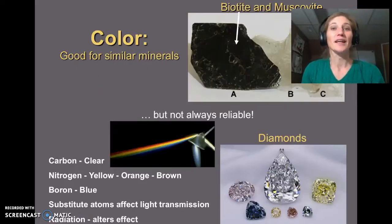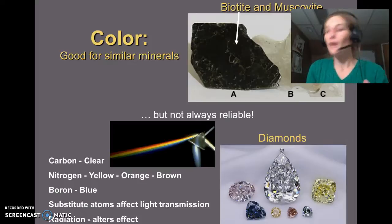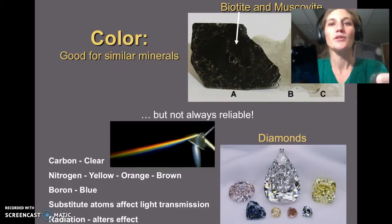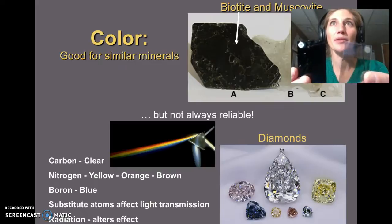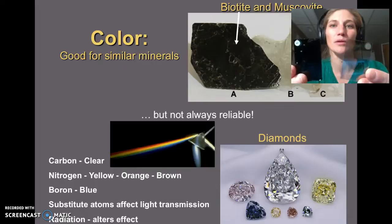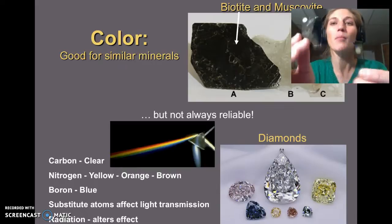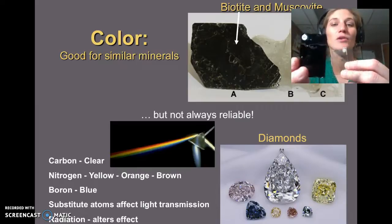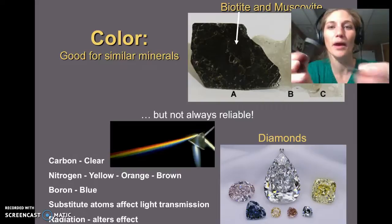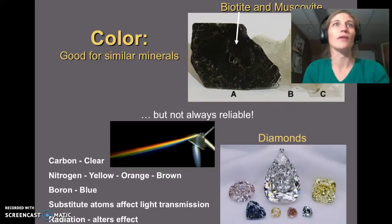Color is a property we like to look at. It's great for minerals that look the same in every other way. Samples 1 and 12 — biotite and muscovite — are exactly the same except for color, so color is how we tell them apart. Biotite has magnesium and iron which gives it a darker color, while muscovite has less of that and you can even see through it.